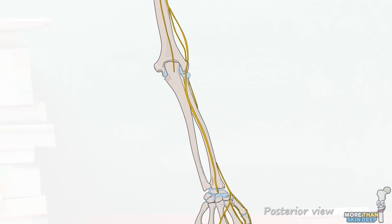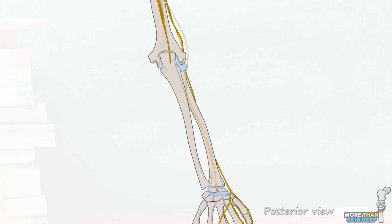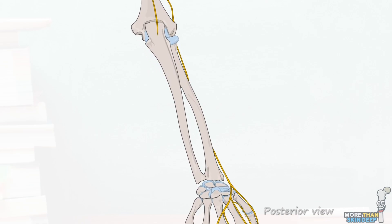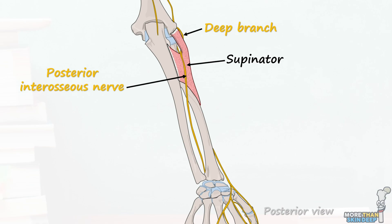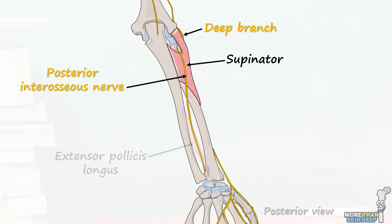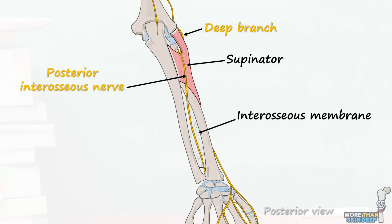From the posterior view, the deep branch starts by passing between the fibers of the supinator muscle, which it innervates. As it emerges between these fibers it changes its name to the posterior interosseous nerve, which it will be known as for the remainder of its course. This branch passes down the forearm in the plane between the superficial and deep extensor muscles. About two thirds of the way down it travels deep to the extensor pollicis longus muscle, where it meets the interosseous membrane connecting the ulna and radius bones. At its most distal extent, the deep branch provides a small sensory contribution to the wrist joint.